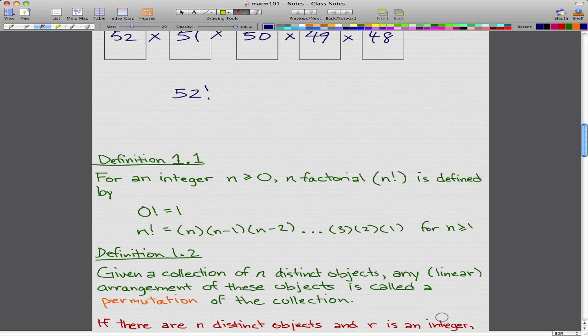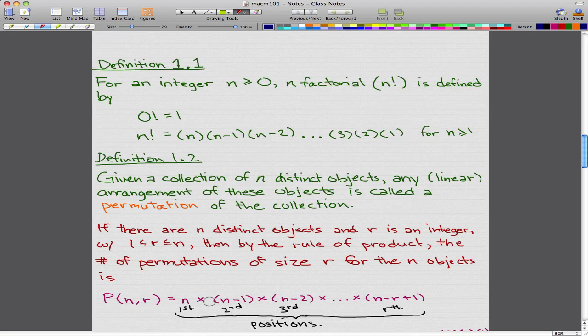The second definition is that given a collection of n distinct objects, any linear arrangement of these objects is called a permutation of the collection.